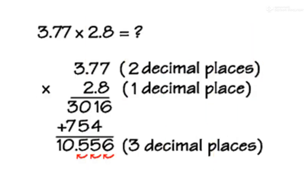1.377 x 2.8. Forget about decimals as I explained. Simple multiply: 377 x 28 is 10,556. How many decimals? 2 and 1 is 3. Then put 10.556.